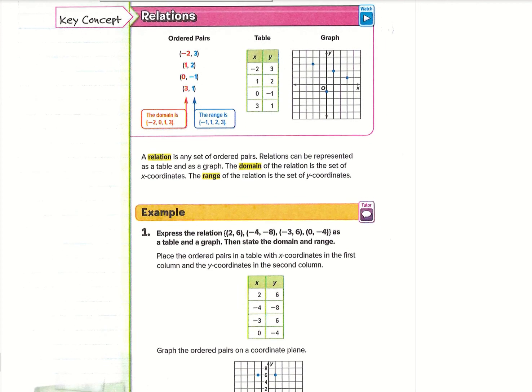So it says a relation is any set of ordered pairs. We kind of see that right here with our set of ordered pairs.